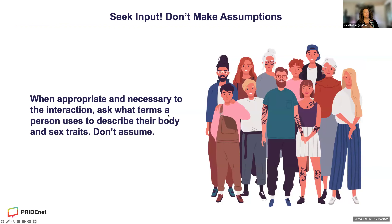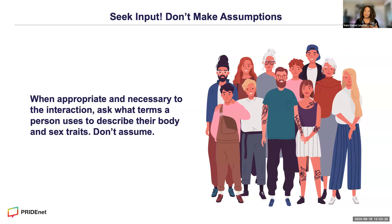It's always important to ask. At the Pride Study, people can fill in the blanks in our survey. Anytime we ask questions like that, we give people the opportunity to use their own terminology. And in your other interactions with people, when it's appropriate — what we've had people talk about is like, if you're going to the dentist, it might seem weird to ask about organs that aren't important to that interaction. But if it is appropriate and necessary to your interaction, you should definitely just ask how people refer to their body and their sex traits and not make any assumptions.